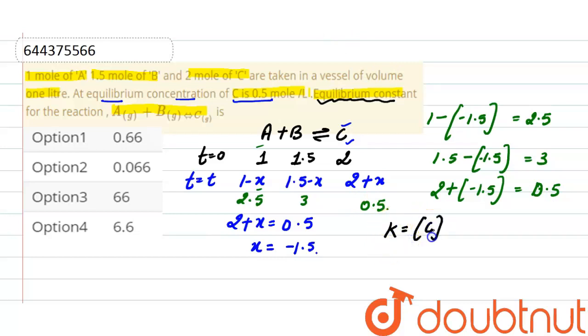Now what is equilibrium constant? Equilibrium constant is the concentration of product, and product here is C, divided by concentration of the reactants. And what is concentration? Number of moles divided by volume, and here volume is 1 liter.